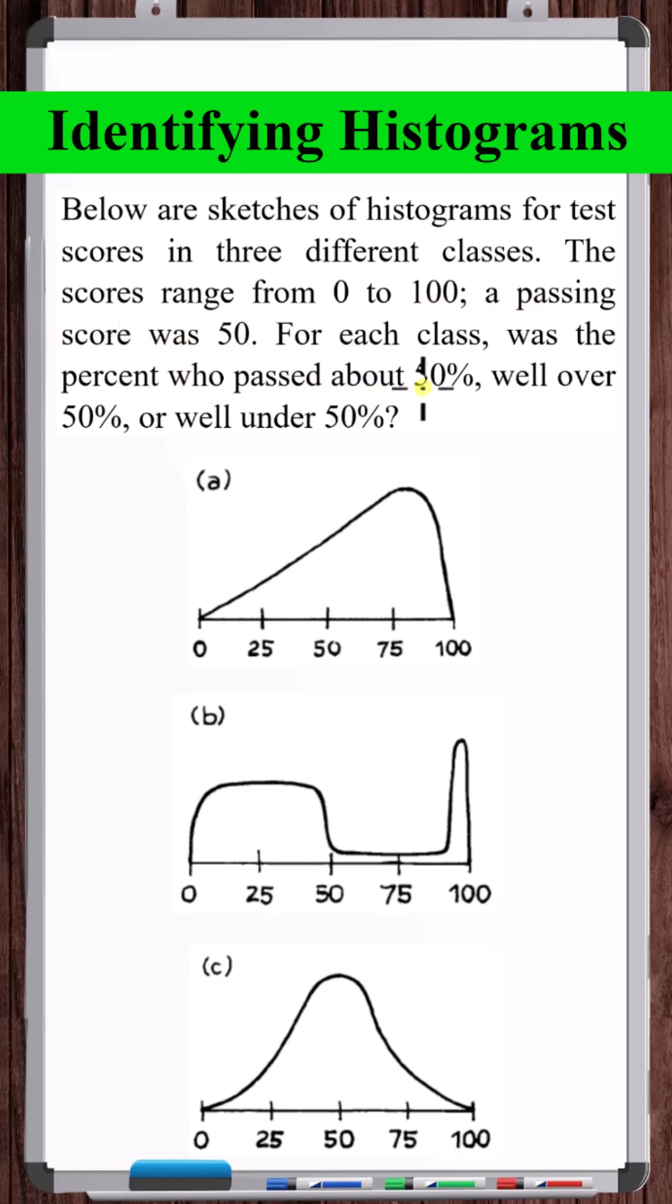For each class, was the percent who passed about 50%, well over 50%, or well under 50%?